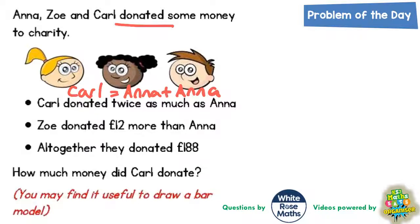Zoe donated £12 more than Anna, and altogether they donated £188. How much money did Carl donate? It says you may find it useful to draw a bar model, and we're going to do exactly that. The key is in that first clue: Carl donated twice as much as Anna.